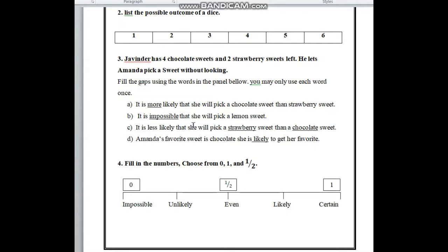In number B, it is impossible that she will pick a lemon sweet because there is no lemon sweet here. There are chocolate sweets and strawberry sweets, so it is impossible.